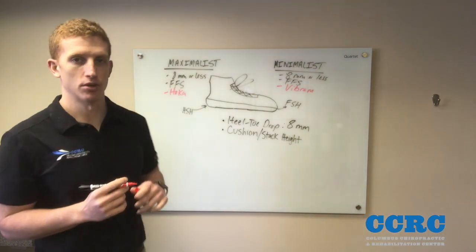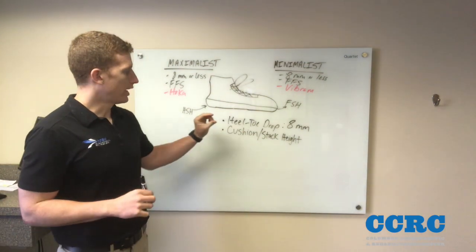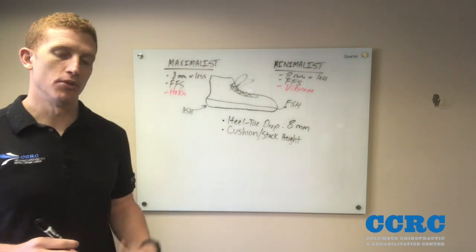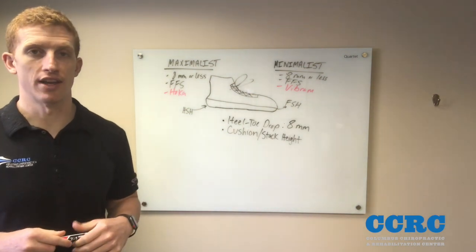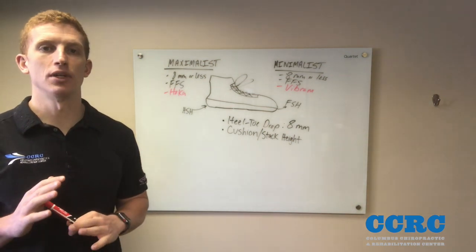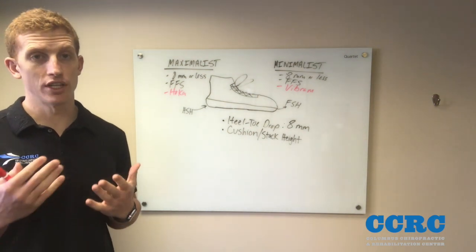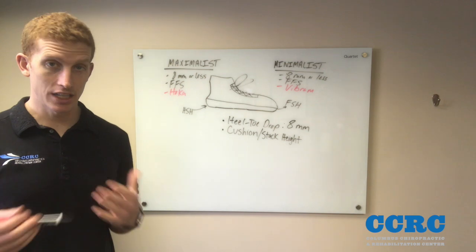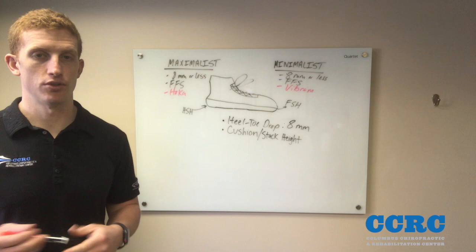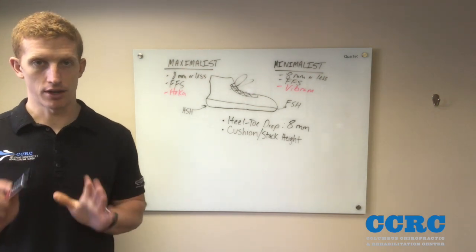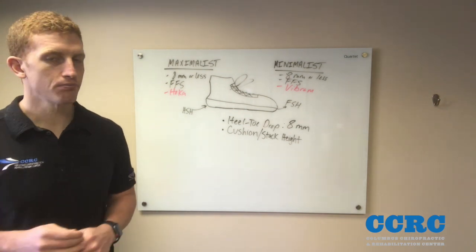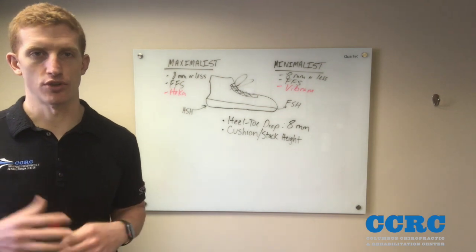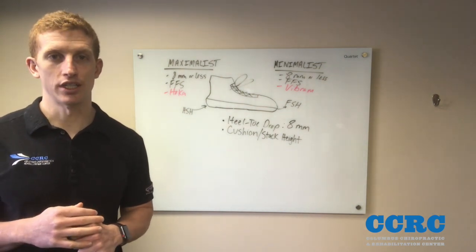Those are two different brands representing two extremes of minimalist versus maximalist shoes. To sum it up: eight millimeters or less heel-to-toe drop is considered both minimalist and maximalist, and the cushion or stack height of the heel versus the forefoot is where the differences lie — but both induce a forefoot strike. It really depends on your foot arch and the cushion you prefer. We recommend getting assessed and having your gait analyzed before picking a shoe, because shoe wear can definitely cause a lot of the injuries you might be feeling. Watch our other videos for an overall review of different styles of shoe wear.